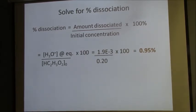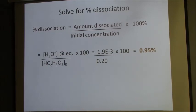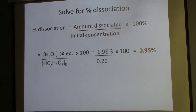So of that original 0.2 molar solution, only 0.95% of it dissociated. That makes sense because this is a weak acid — a weak acid is not going to come anywhere close to fully dissociating. Having a percent dissociation in the range of one to three is a very reasonable answer, especially starting with a low concentration. Percent dissociation for weak acids will always be relatively low, and that's all you have to do.